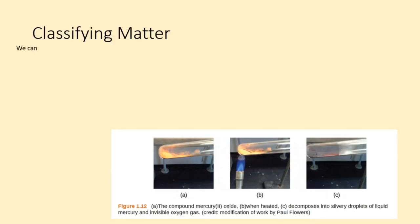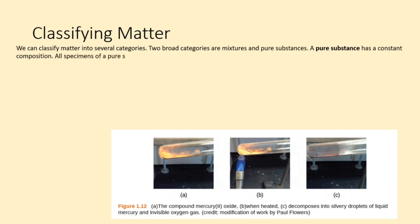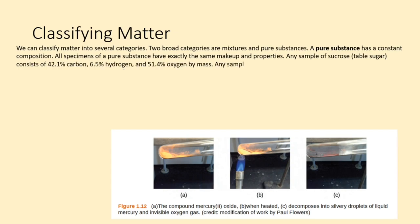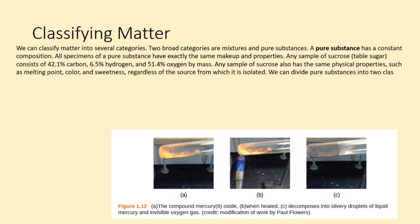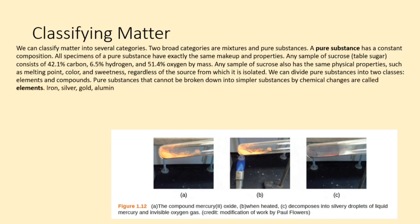We can classify matter into several categories. Two broad categories are mixtures and pure substances. A pure substance has a constant composition. All specimens of a pure substance have exactly the same makeup and properties. Any sample of sucrose, table sugar, consists of 42.1% carbon, 6.5% hydrogen, and 51.4% oxygen by mass. Any sample of sucrose also has the same physical properties, such as melting point, color, and sweetness, regardless of the source from which it is isolated. We can divide pure substances into two classes: elements and compounds.